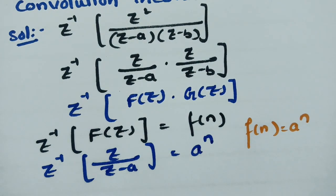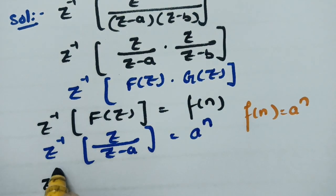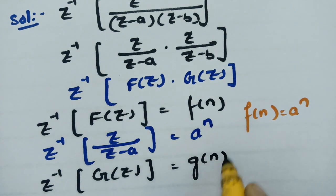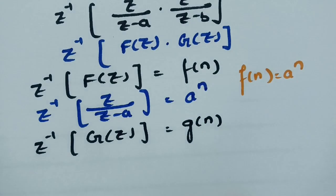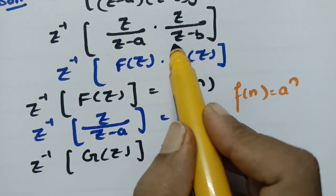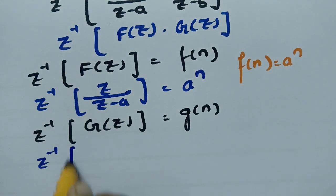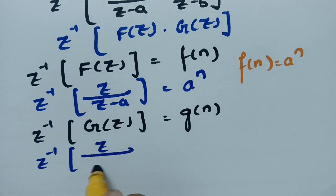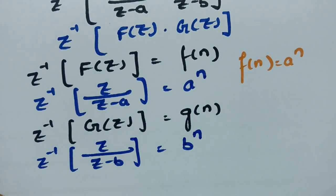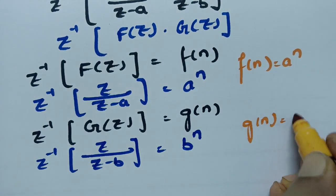Next, we find the inverse Z transform of G of Z, which is equal to G of n. G of Z is Z by (Z minus B), and therefore the inverse Z transform of Z by (Z minus B) is B power n. So G of n equals B power n.